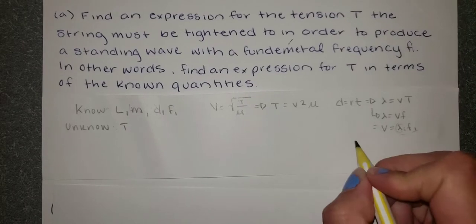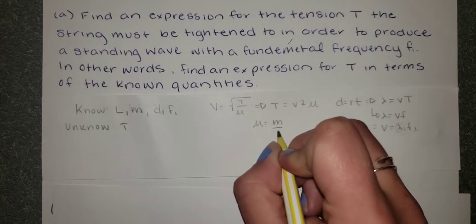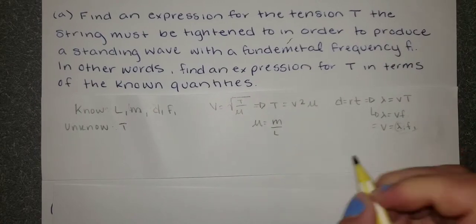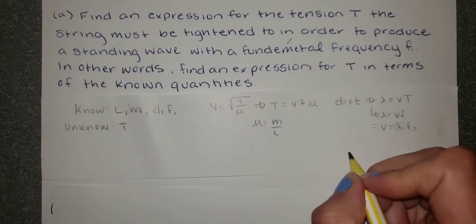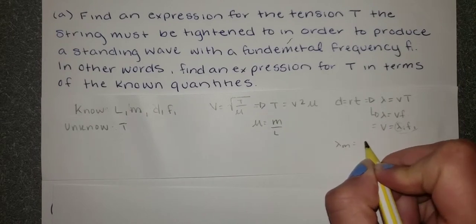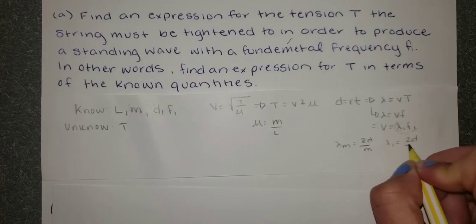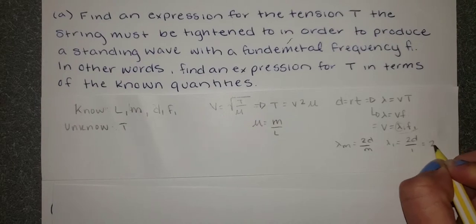We also need to remember that linear density is equal to mass over length. So in order to find this lambda, we're going to recall from class that lambda m is equal to 2d over m. So if we're looking for lambda 1, that's just going to be 2d over 1 or 2d.